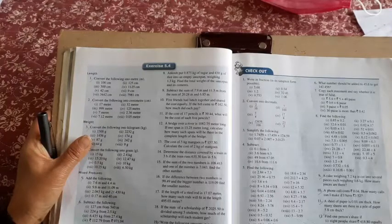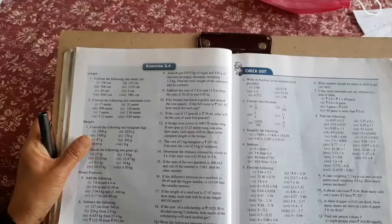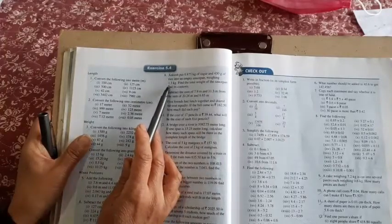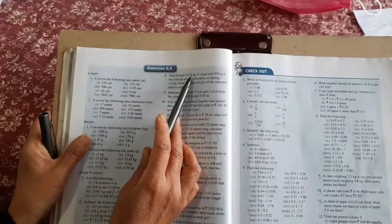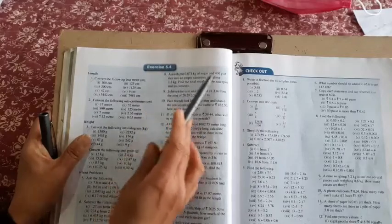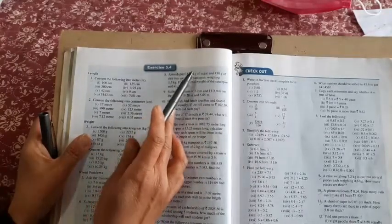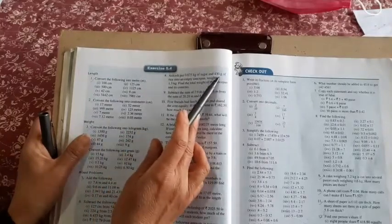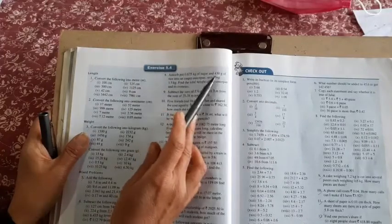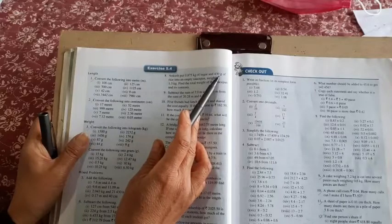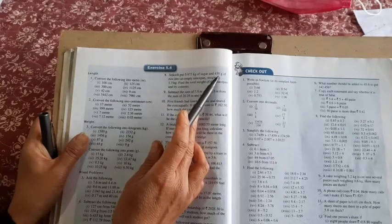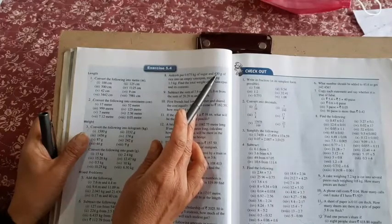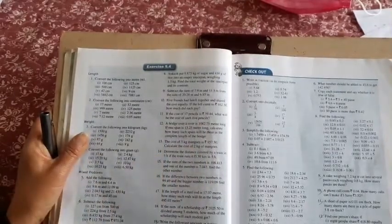Question 8: You put 0.875 kg of sugar and 430 grams of rice into an empty saucepan. The weight of the saucepan is 1.3 kg. Find the total weight of the saucepan and its contents. This is the weight of the saucepan, this is the weight of rice, and this is the weight of sugar. You have to add all of them, but they are in different units. Change grams to kilograms first. To change grams to kilograms, divide by 1000. That means move three points to the left, one, two, three. It is going to be 0.430 kilograms. Then you can add all of them and your answer will be in kilograms.